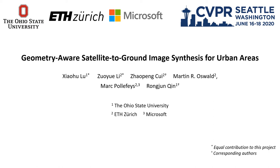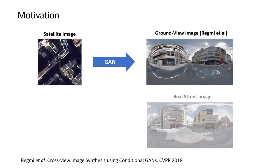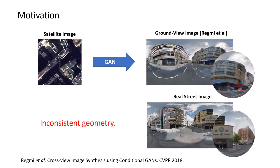In this video, we introduce geometry-aware satellite to ground image synthesis. Natural scene synthesis is a challenging task. Conditional GANs can generate plausible ground view images. However, they are typically not consistent with the geometry of the satellite image.